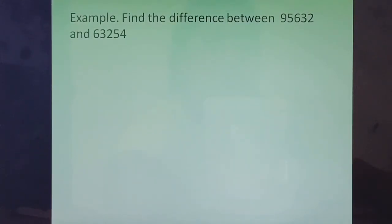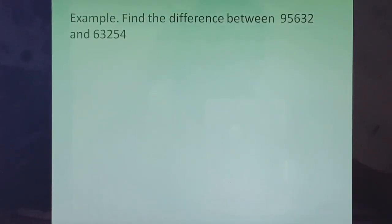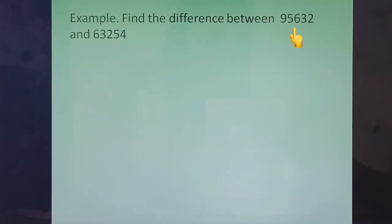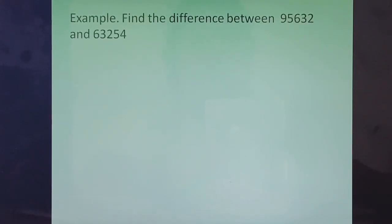Another example: find the difference between 95632 and 63254. Now look at the question carefully. They have asked us to find the difference between two numbers. They can write the bigger number first or the smaller number first. We have to look at both numbers, see which is bigger, and write the bigger number first. We have identified the bigger number is 95632. We will write it on top, and below it write 63254, then subtract. You may pause the video, do the subtraction, and then I will show you the answer.